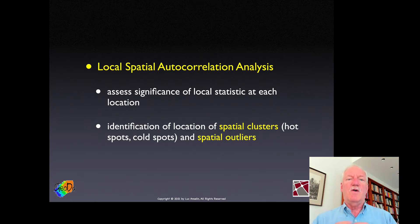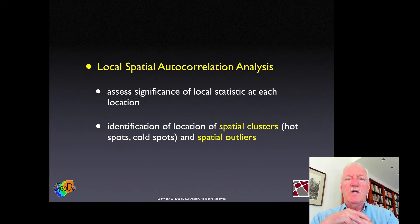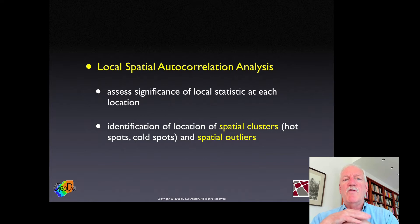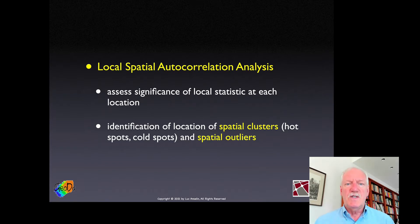LISA does two things: it finds out which locations have a significant statistic, and then it interprets the result in terms of either the presence of clusters or the presence of spatial outliers. Spatial clusters will be points that are similar; spatial outliers are points that are very different from their neighbors. We won't focus on outliers too much now, but that's the essence of this statistic.